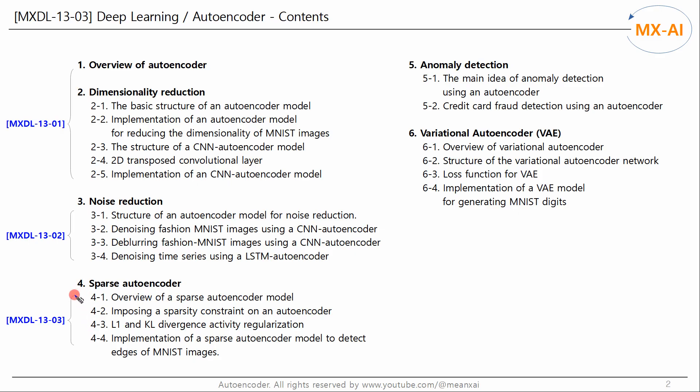So far, we have looked at a sparse autoencoder and used it to detect edges in MNIST images. In the next video, we will look at anomaly detection using an autoencoder.